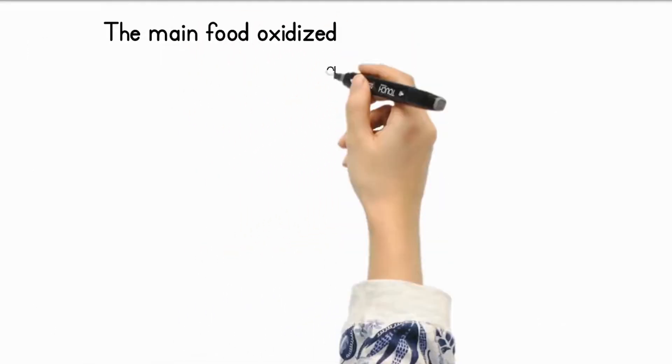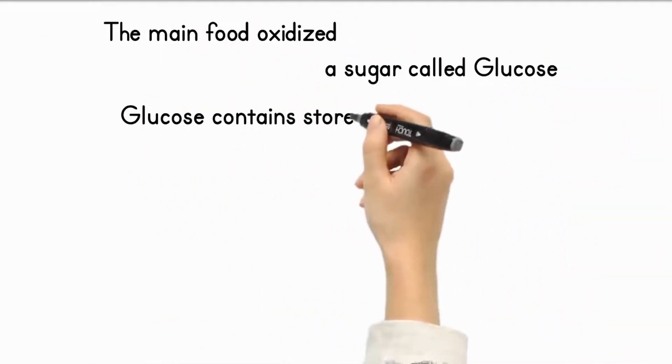The main food oxidized is a sugar called glucose. Glucose contains stored chemical energy that can be converted into other forms of energy that the cell can use.